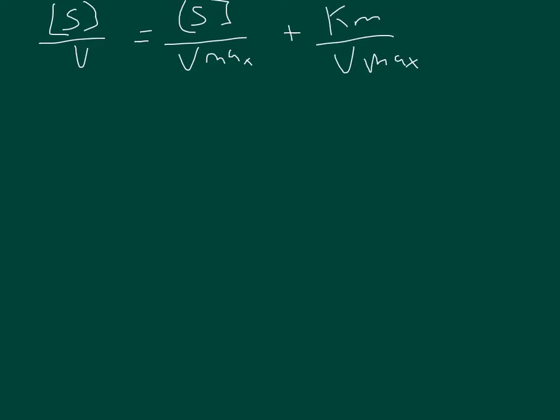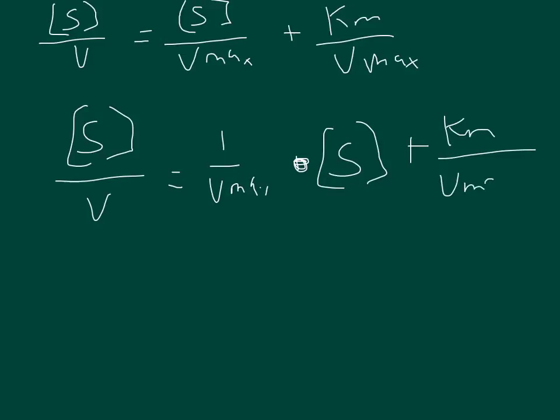So from there I'm going to just break out the substrate concentration to be by itself again, so I get substrate over V is equal to 1 over Vmax times the substrate concentration plus Km over Vmax. And so we have Y equals MX plus B.